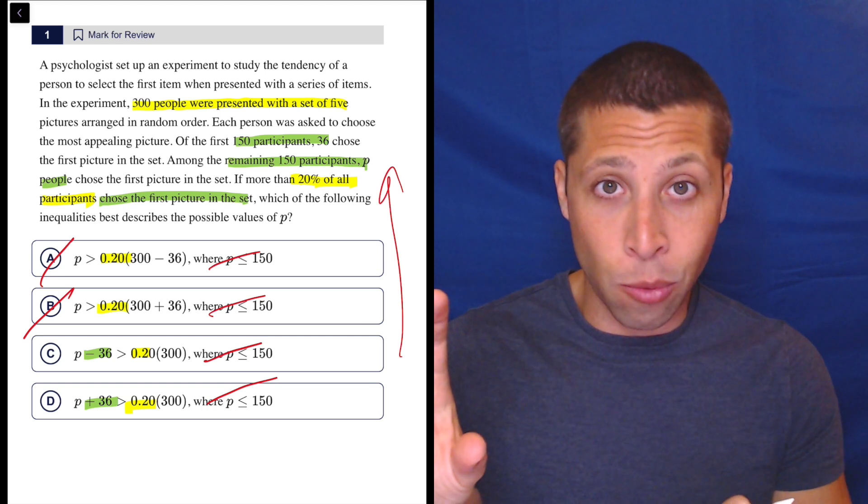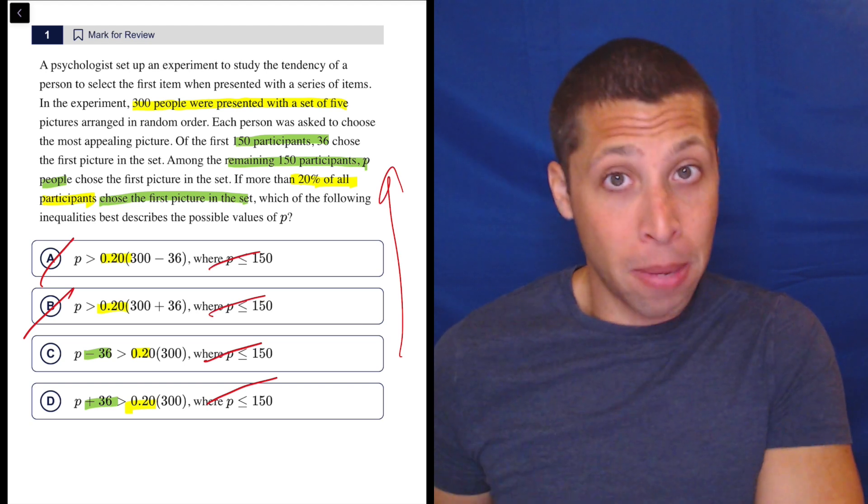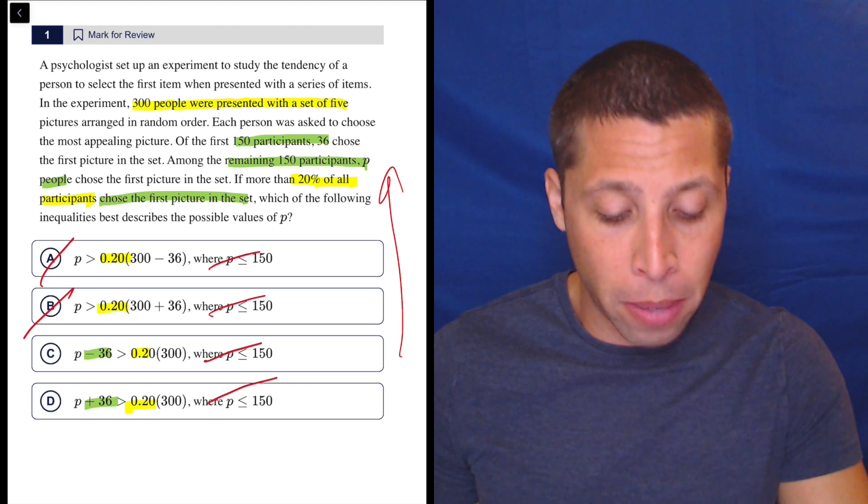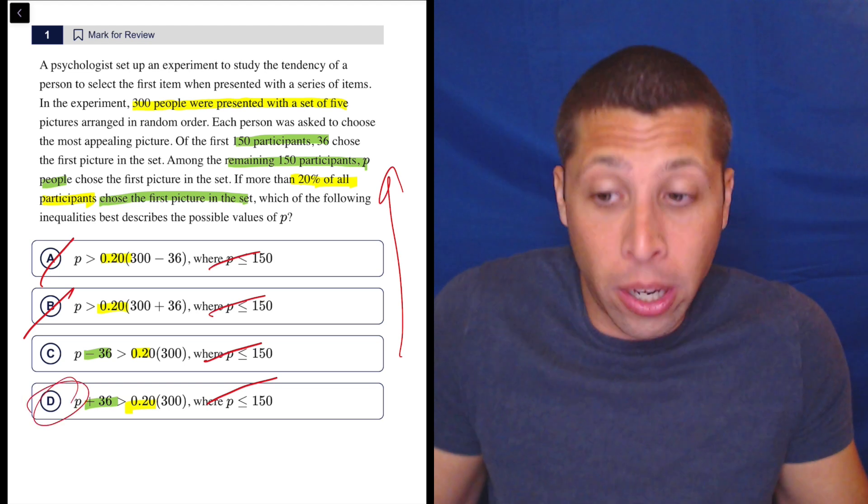36 in one group, P in another. So together, 36 plus P is the total number of people who chose the first picture. So they want a total. So choice D, we're going to add them.